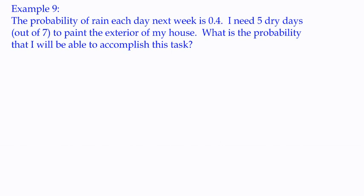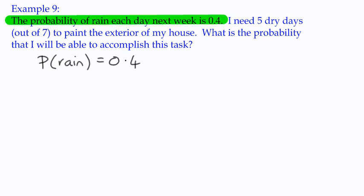We know that from what it says here, we need to be given some information and we're usually given one of the probabilities here. The probability of rain each day is 0.4. So I can state that the probability of rain is 0.4, or 40% chance of rain each day.